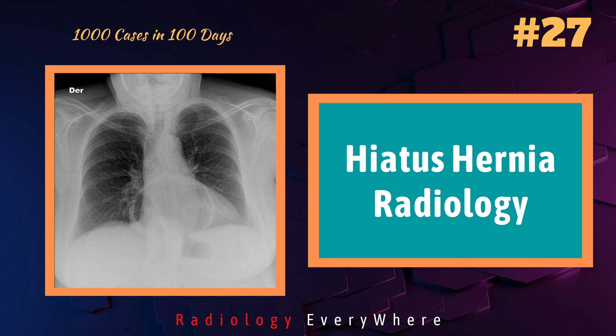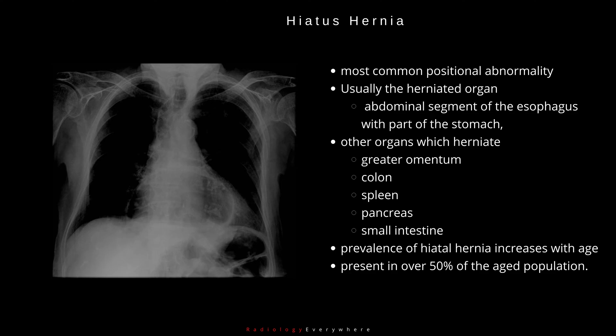In this video, we discuss hiatus hernia. This is the most common positional abnormality. Usually, the herniated organ is the abdominal segment of the esophagus with part of the stomach, although greater omentum, colon, spleen, pancreas, and small intestine are sometimes involved.